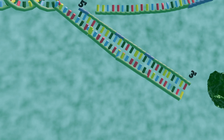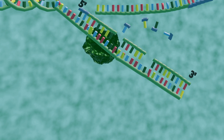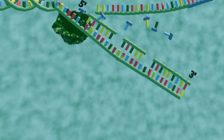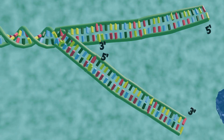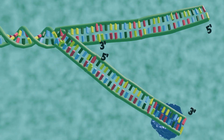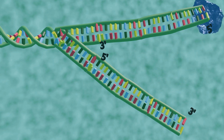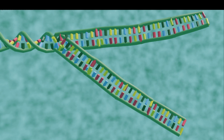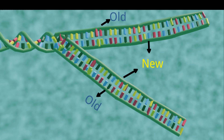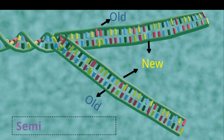Once all of the bases are matched up, an enzyme called exonuclease strips away the primer. The gaps where the primers were are then filled by more complementary nucleotides. Finally, an enzyme called DNA ligase seals up the sequence of DNA into two continuous double strands. The result is two DNA molecules consisting of one new and one old chain of nucleotides — this is why DNA replication is described as semi-conservative: half of the chain is part of the original DNA molecule, half is new.